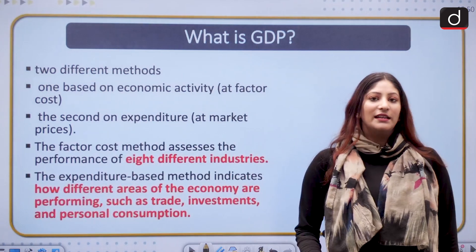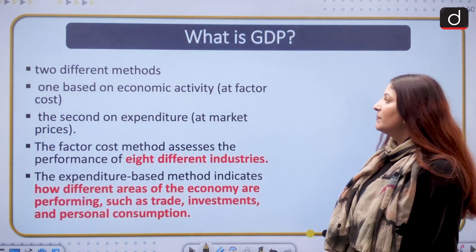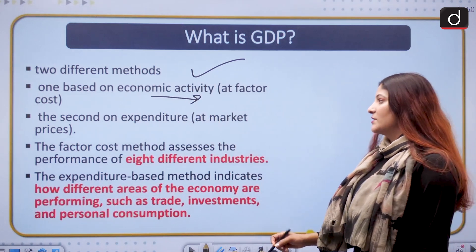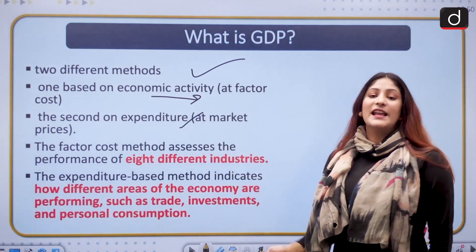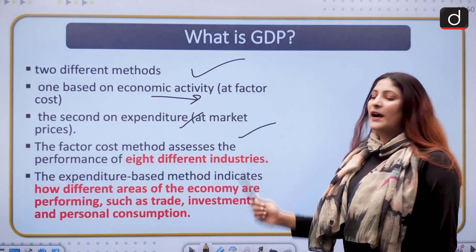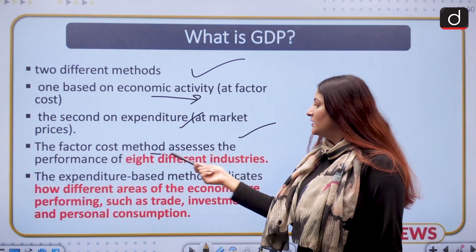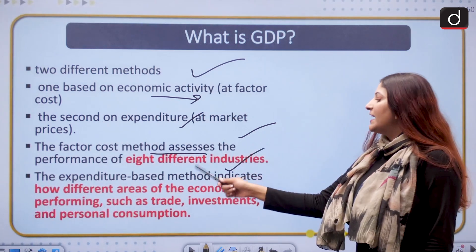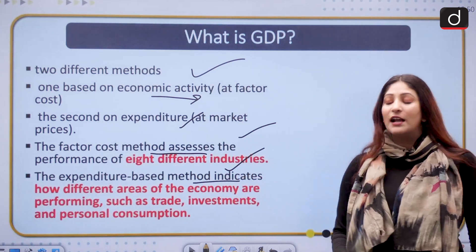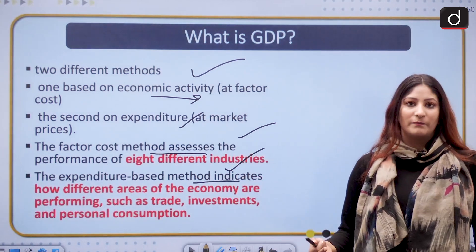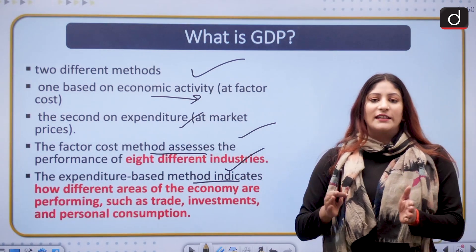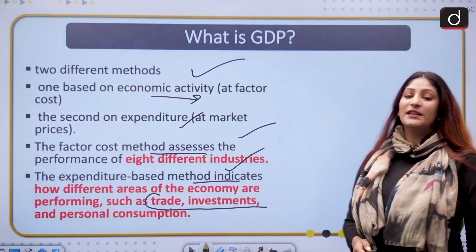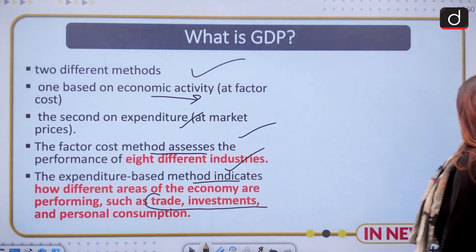India calculates its GDP by two different methods. One is based on economic activity — that is the factor cost — and the second is the expenditure level, which is the market price. The factor cost method assesses the performance of eight different industries, and the expenditure-based method indicates how different areas of the economy are performing — what sector-wise performance is there — and these include trade, investment, and personal consumption.